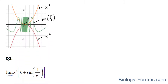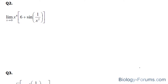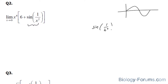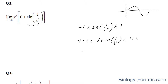In question 2, they're asking us to find the limit as x approaches 0 for this function. We'll start off with what we know — the sine function also hovers between negative 1 and 1. So sine of 1 over x squared is greater than or equal to negative 1 and less than or equal to positive 1. We then add 6 to every part, giving us 5, 6 plus sine of 1 over x squared, and 7.